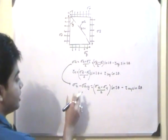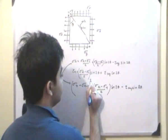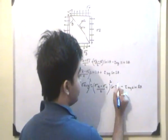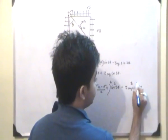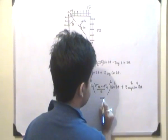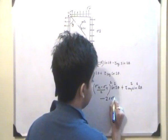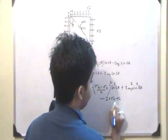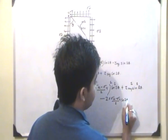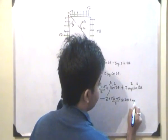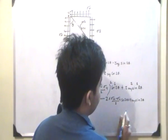Now if I square both sides, I will have a term like: (sigma x minus sigma y)/2 squared times cos²(2θ), plus tau xy squared times sin²(2θ), minus 2 times (sigma x minus sigma y)/2 times cos(2θ) times tau xy times sin(2θ).